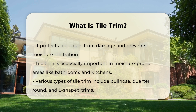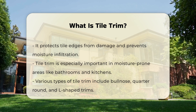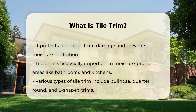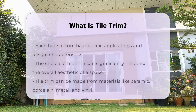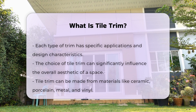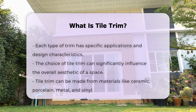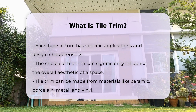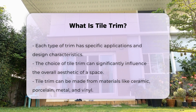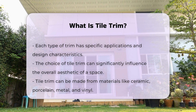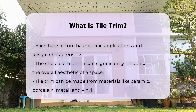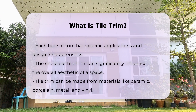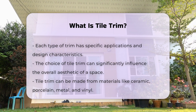The choice of trim can significantly impact the overall look of a tiled space. Tile trim can be made from several materials; common options include ceramic, porcelain, metal, and vinyl. The selection often depends on the type of tile used and the desired aesthetic.